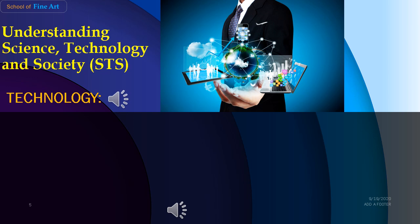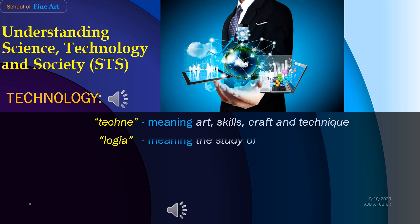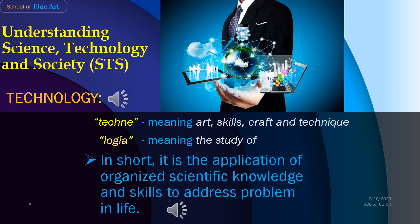Now let us understand the meaning of technology. Technology comes from two Greek words: techne and logos. Techne means art, skills, craft, or technique — the means by which a thing is done, produced, or gained. Logos means the study of. In short, technology is the application of organized scientific knowledge and skills to solve problems in life. For instance, the cart and the wheel were invented to address the need for a more efficient mode of transporting people and goods from one place to another, applying the science of machines and friction.